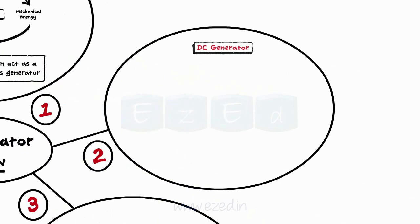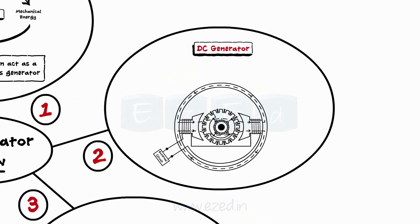The different components of the DC machine are yoke, armature, poles, commutator, brushes, bearings, etc.